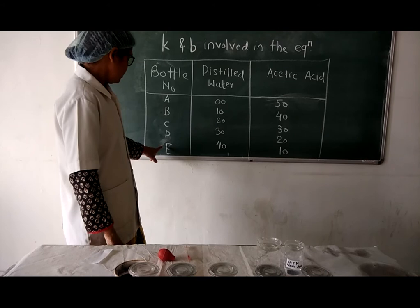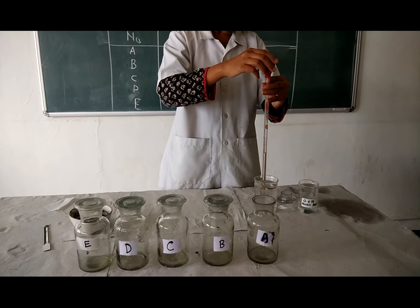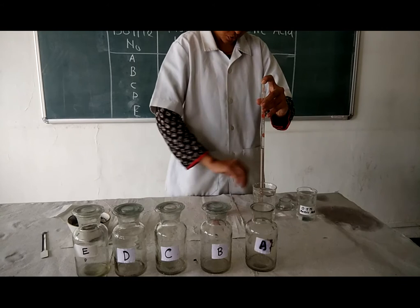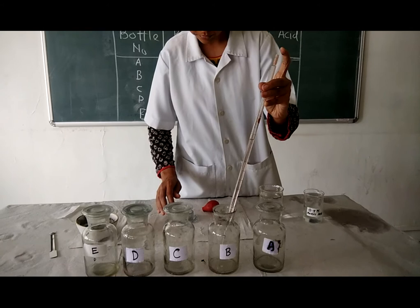Now first of all, I am adding the distilled water. No distilled water is needed in the first bottle as it is 0 ml. In bottle B, I am adding 10 ml distilled water.